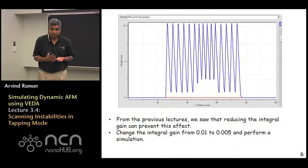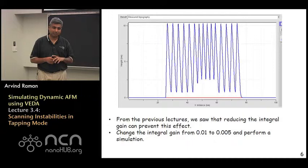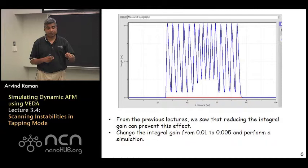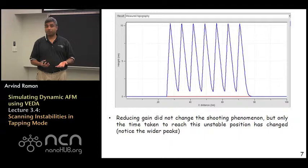So the first response when one sees this is that perhaps you have chosen a very large integral gain. Because we have shown before that if the integral gain becomes very large, you can get these oscillatory kind of instabilities. So the first thought is, well, this must be because we got too high an integral gain, so you may want to reduce the integral gain a little bit. If you do that and repeat the simulation and see what kind of height profile you get, you find that lo and behold, you have not improved the situation.